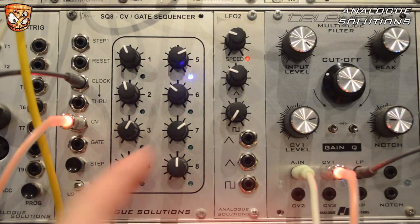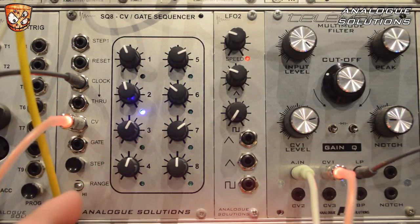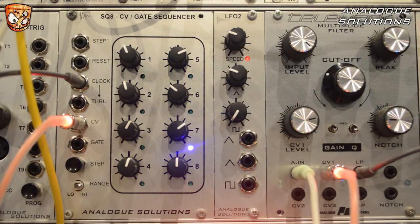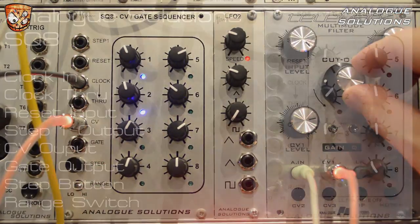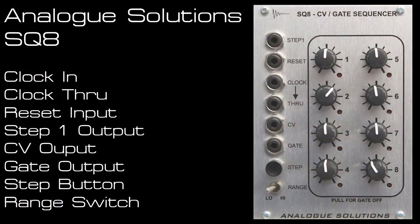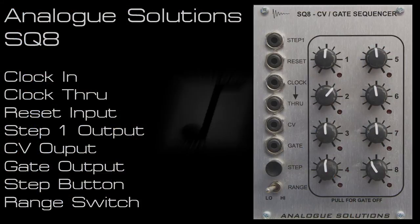That's the SQ8 gate and CV sequencer from Analog Solutions — a nicely feature-packed module with useful additions such as the step button, step one output, range switch, and clock through output.